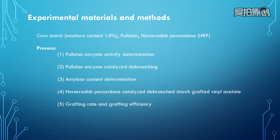The next section covers experimental materials and methods. We use corn starch, which has 14% moisture content, along with plurine and the HRB enzyme. The bottom of the slide shows the five steps of the process.